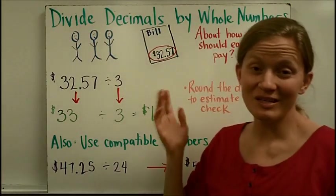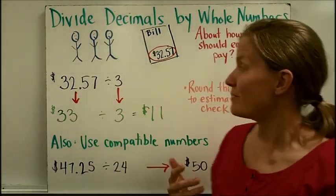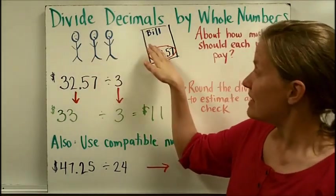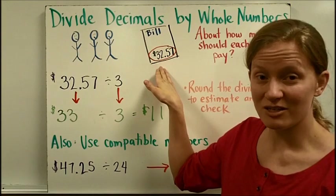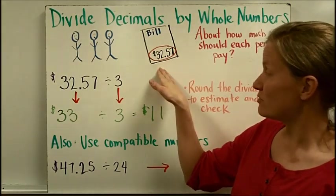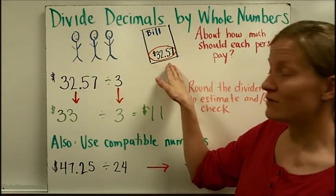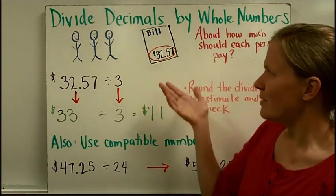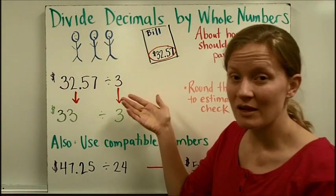Divide decimals by whole numbers. Here's an example in real life where you might have to do that. Let's say three friends went out to eat and they decided that they wanted to share the bill evenly. And when the check came, it was $32.57. And the problem is about how much each person should pay so that they share the bill evenly.